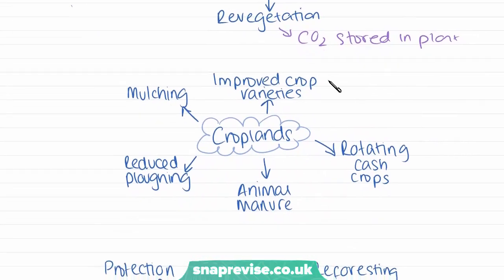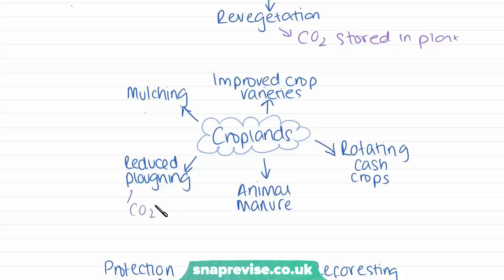In croplands, we can improve crop varieties, use the process of mulching — where you put dead leaf litter on the floor to increase the fertility of the soils — reduce ploughing because ploughing fields releases CO2 from the soils back into the atmosphere, add manure to increase productivity, and rotate crops, because crops use up specific minerals in the soil, so using different types of crops keeps the soils fertile for longer.